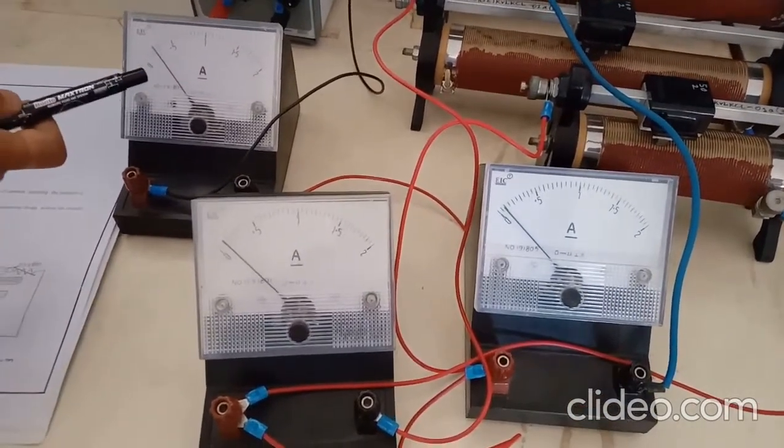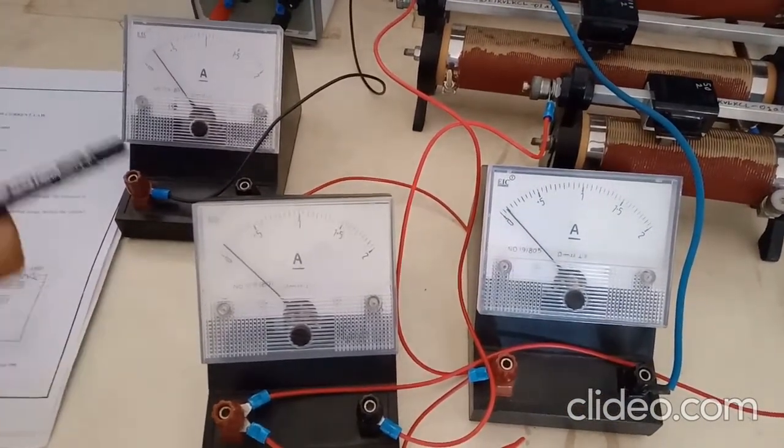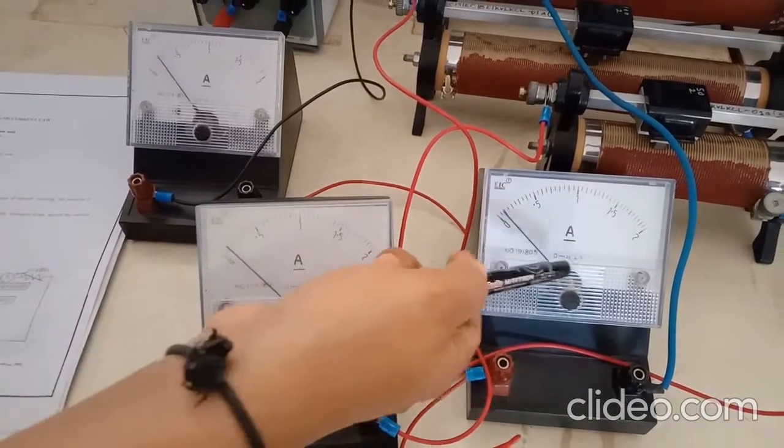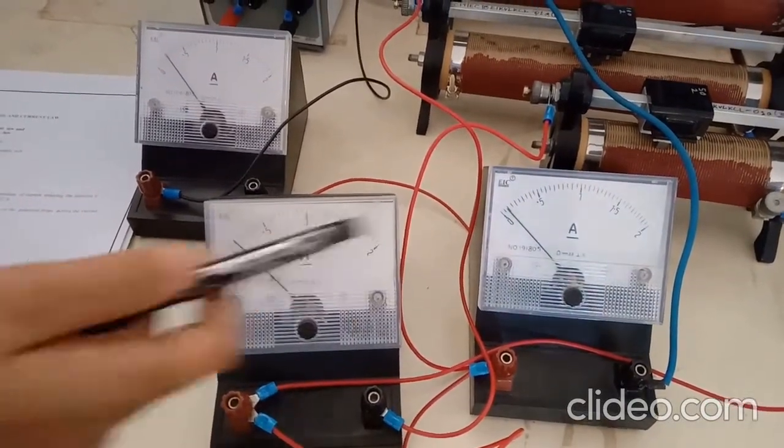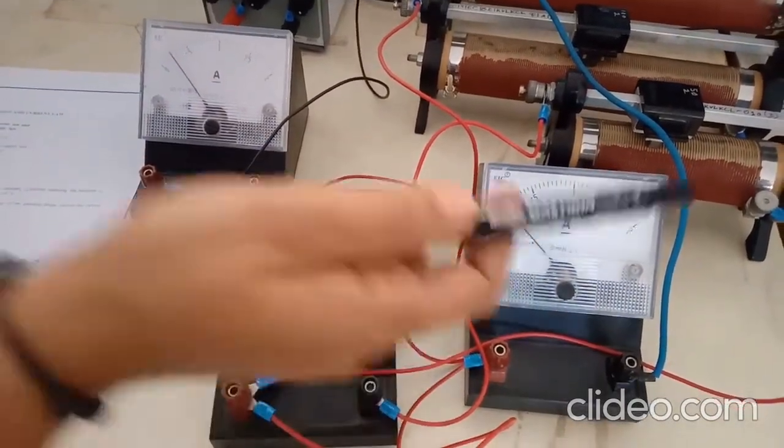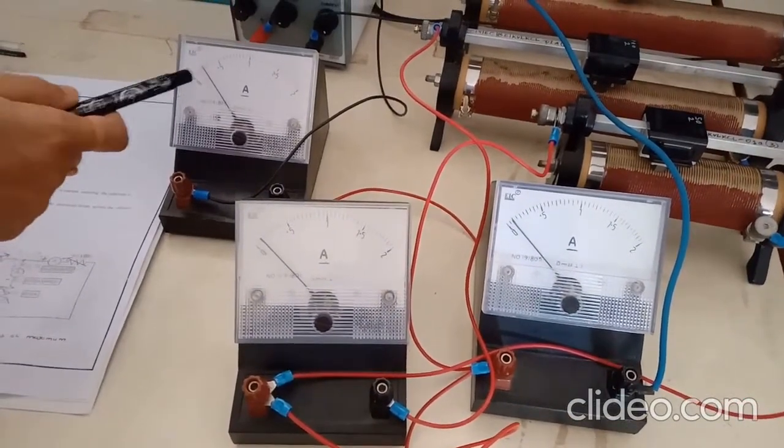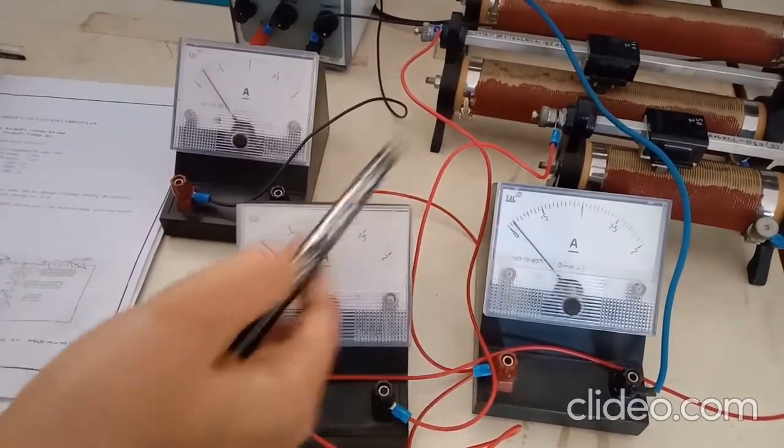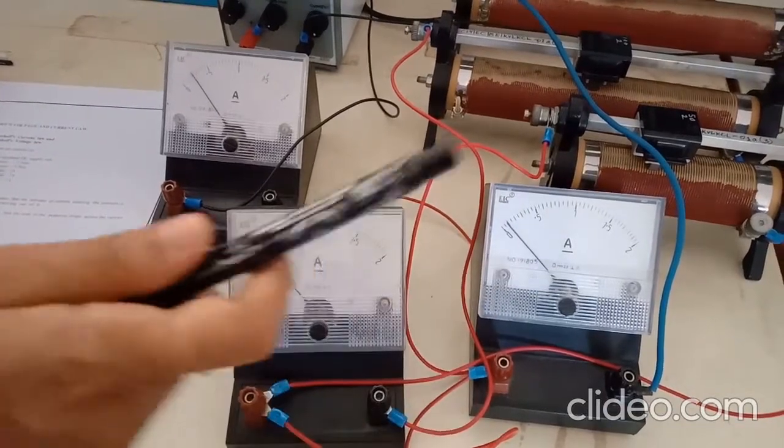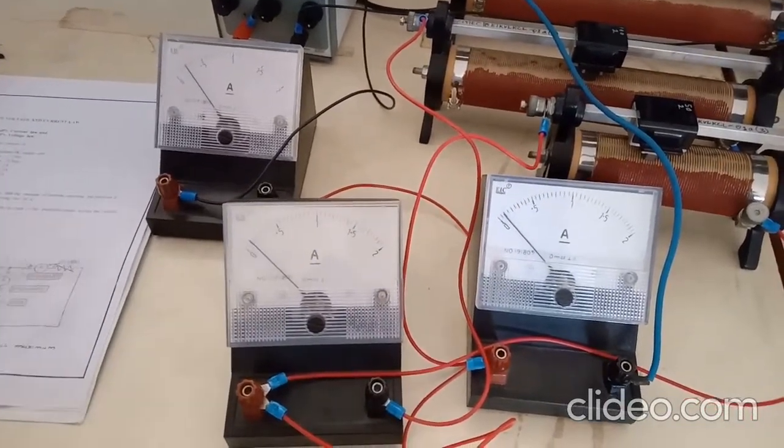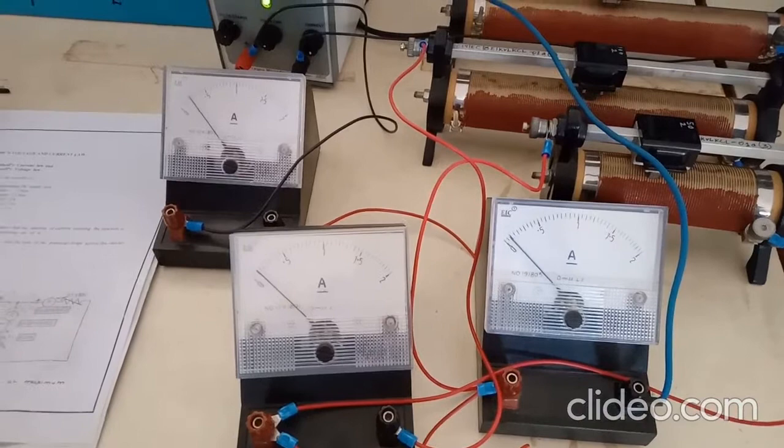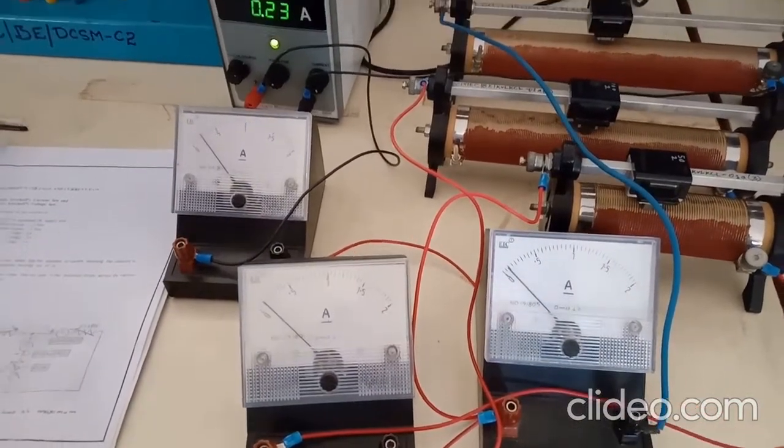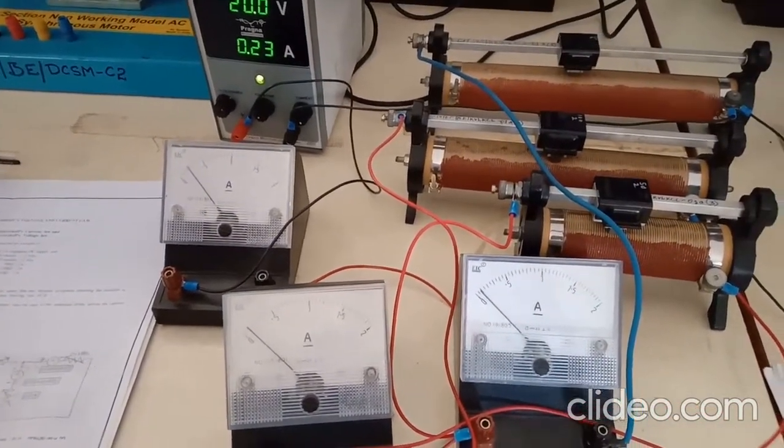Here i1 is 0.4, i2 is 0.2, and i3 is 0.2. When you add them, i1 is 0.4, and i2 plus i3 means 0.2 plus 0.2, which is 0.4. This shows that KCL is verified. Similarly, you have to take the readings for 25 volts and 30 volts.